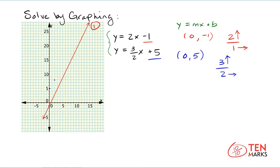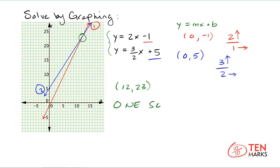I'm going to connect these two points with a blue line. Now that the blue line is in, I see that these lines do intersect — right here at the point 12, 23. So when x equals 12, y equals 23. That means this system of equations, as determined by graphing, has one solution.